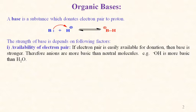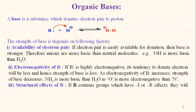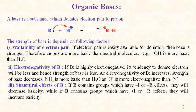Second is electronegativity of B: if B is highly electronegative, its tendency to donate an electron pair will be less, and hence the strength of the base is less. As the electronegativity of B increases, strength of the base decreases. Therefore ammonia is more basic than water, as oxygen is more electronegative than nitrogen.